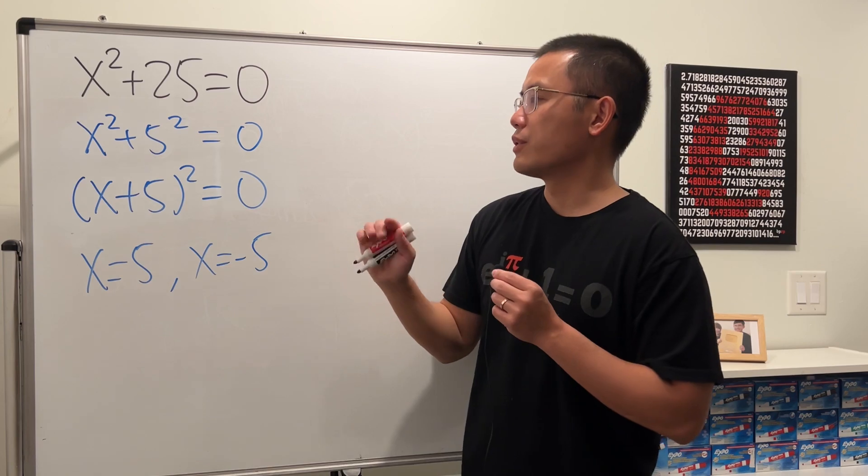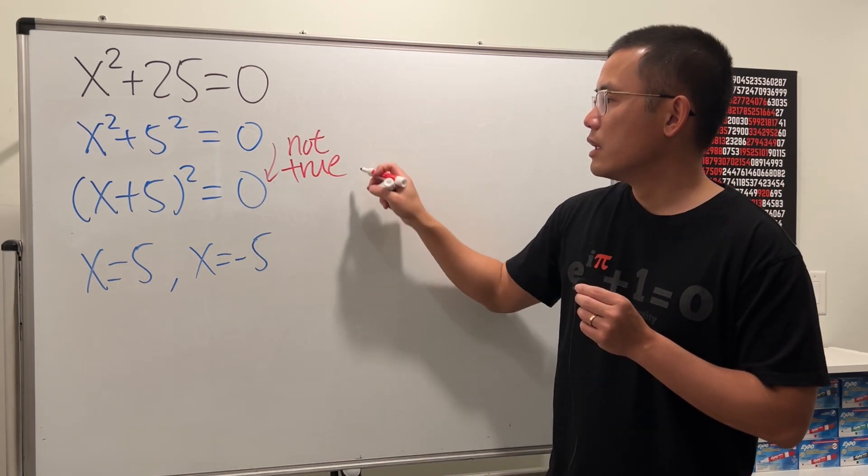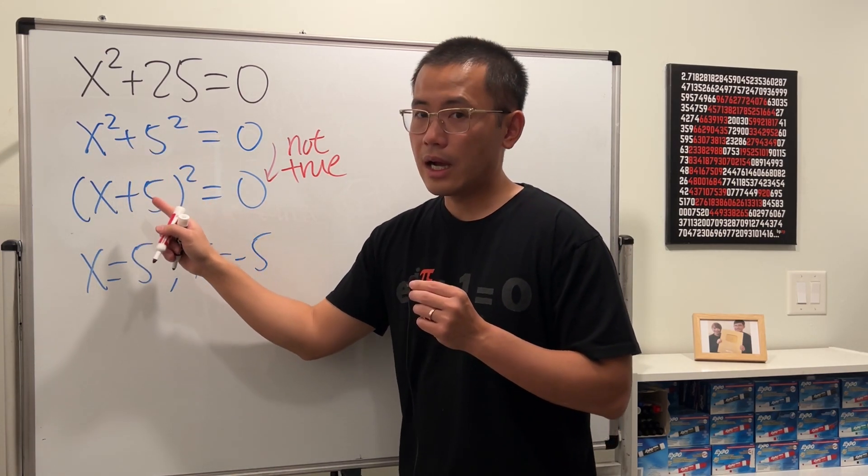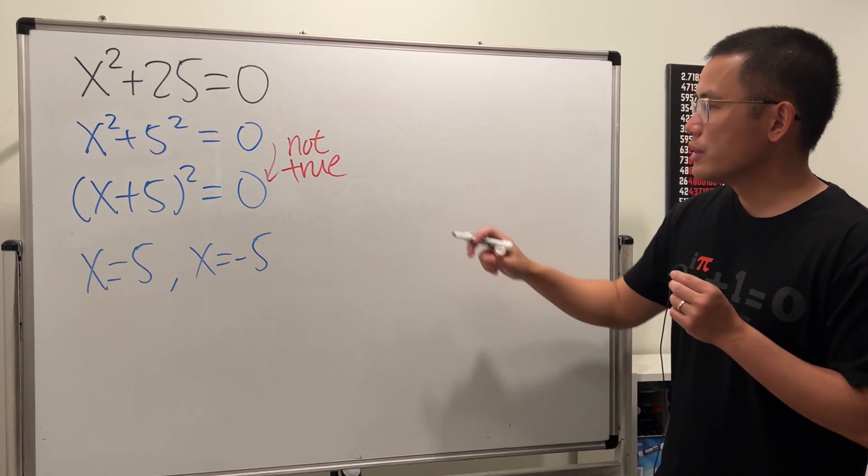From here to here is true, that's okay, but from here to here, this is actually not correct. So be careful, even though we have square here and square here, but this is an addition. This is not how you factor and get this. Why though? Let me just show you.